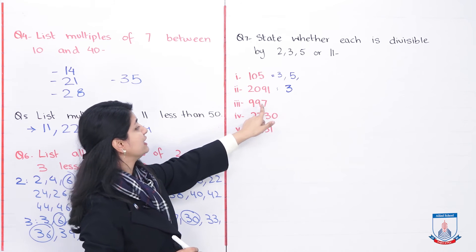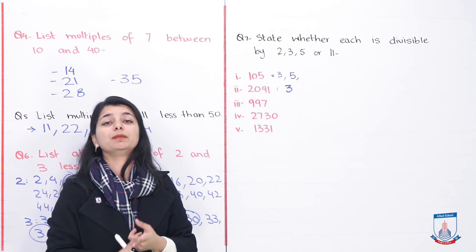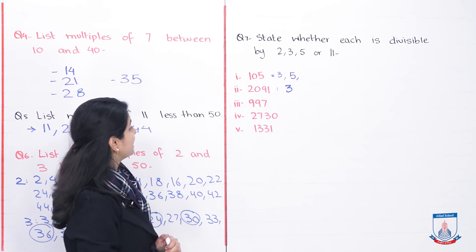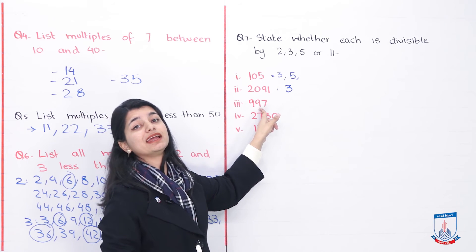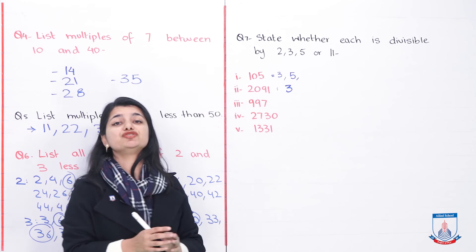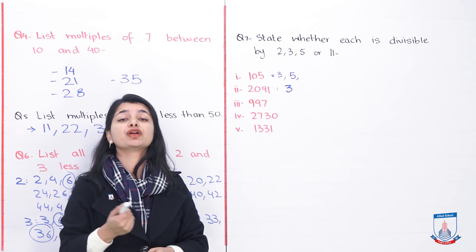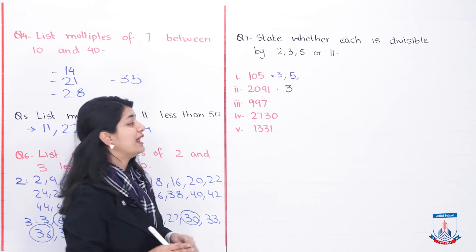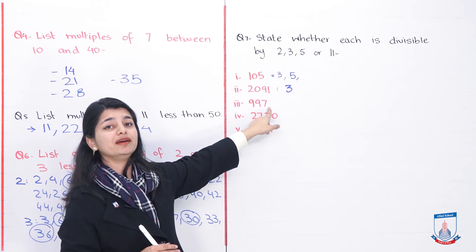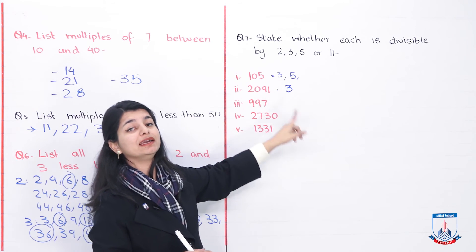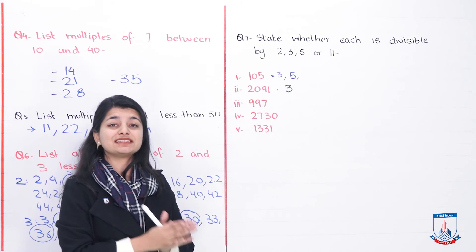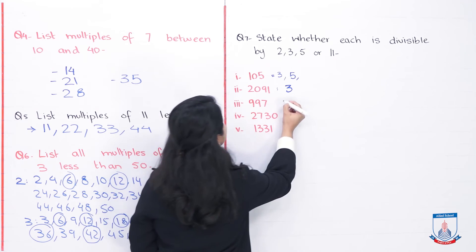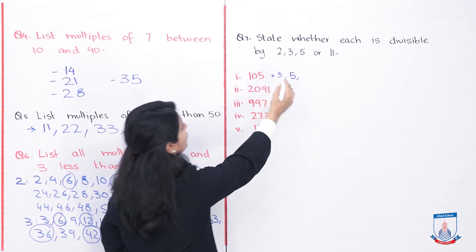Next, check 997. It cannot be divided by 2 — not an even number. It cannot be divided by 5. Check by 3: 9 plus 9 is 18, plus 7 is 25. Is 25 divisible by 3? No. Check by 11: 9 plus 7 is 16, minus 9 is 7. Since 7 is neither 0 nor 11, this cannot be divided by any of these four numbers.